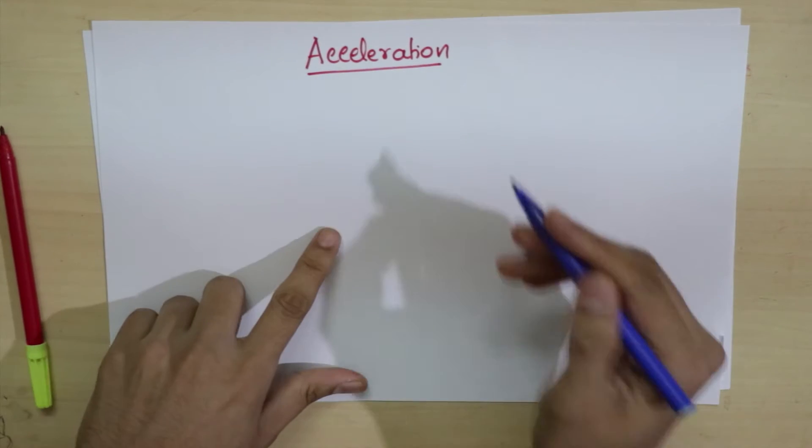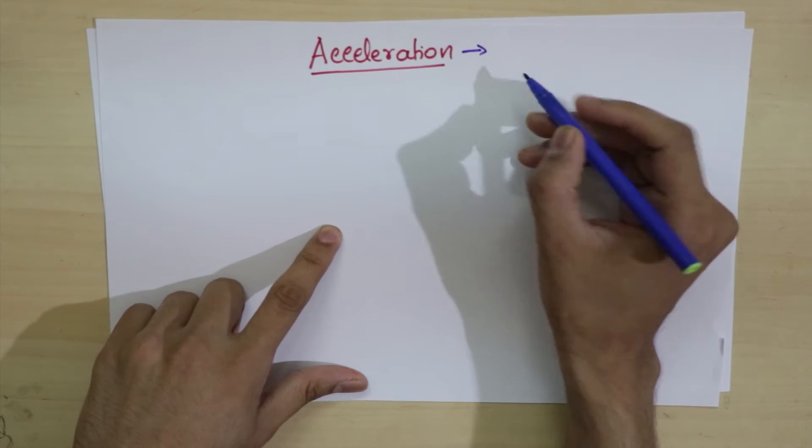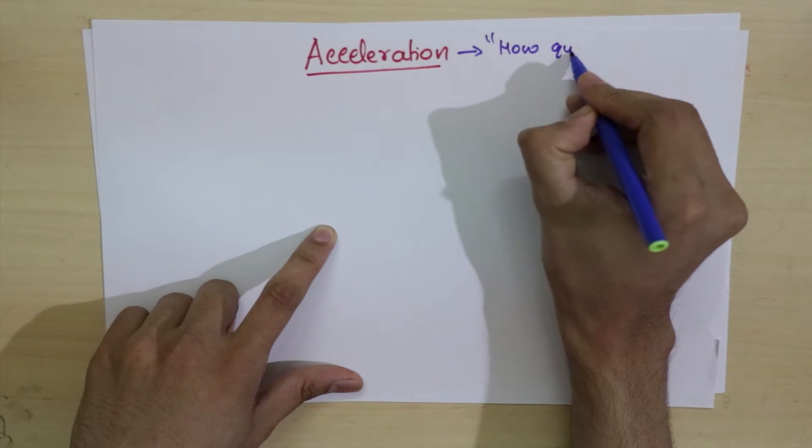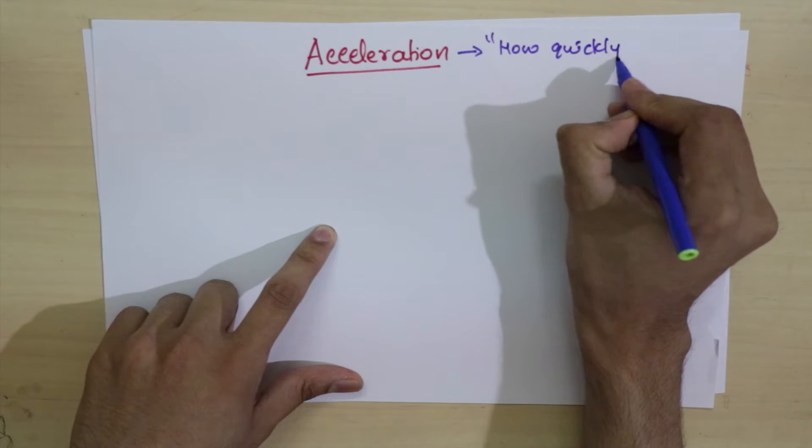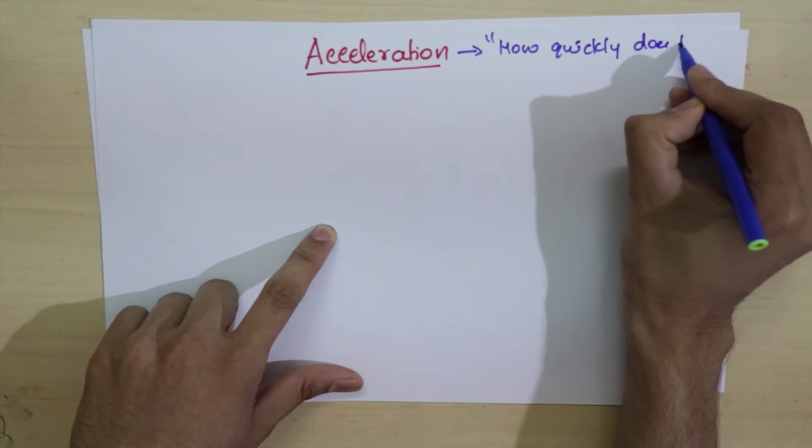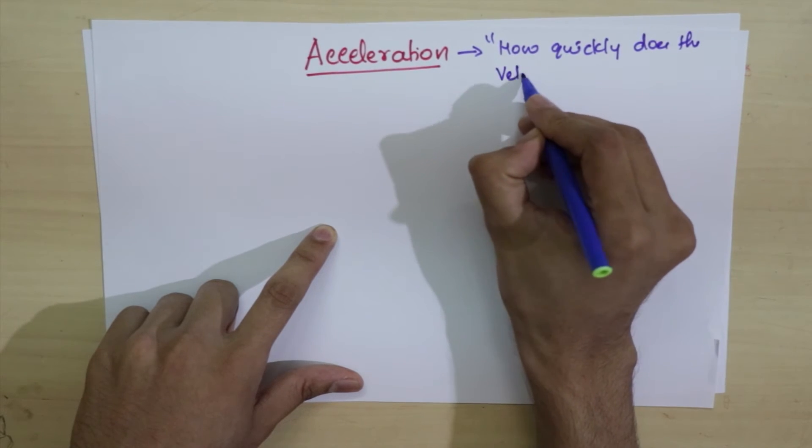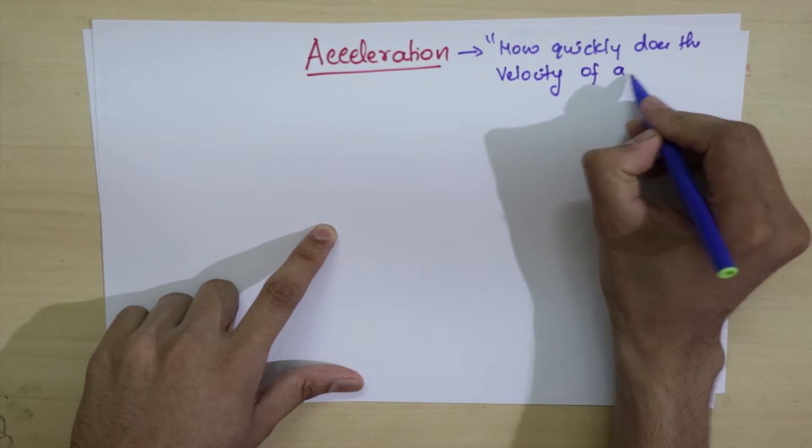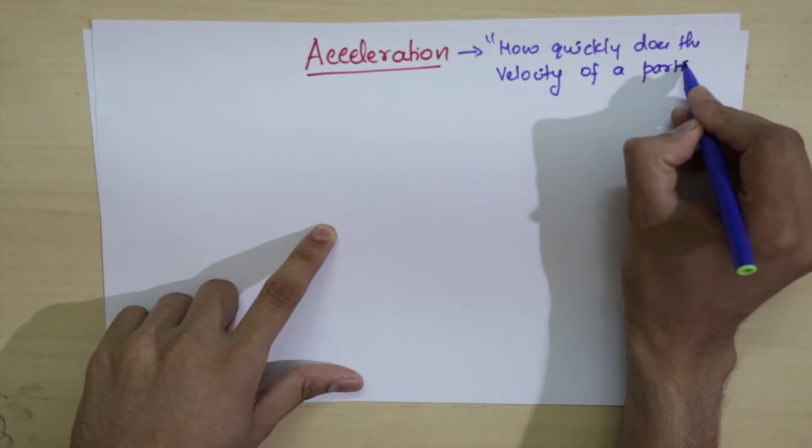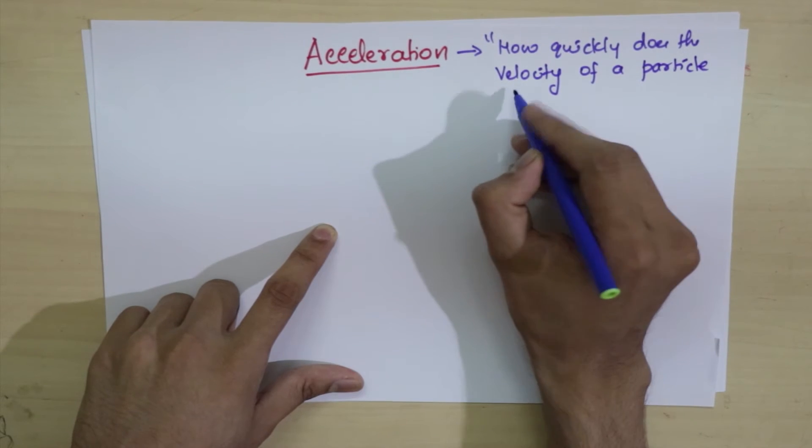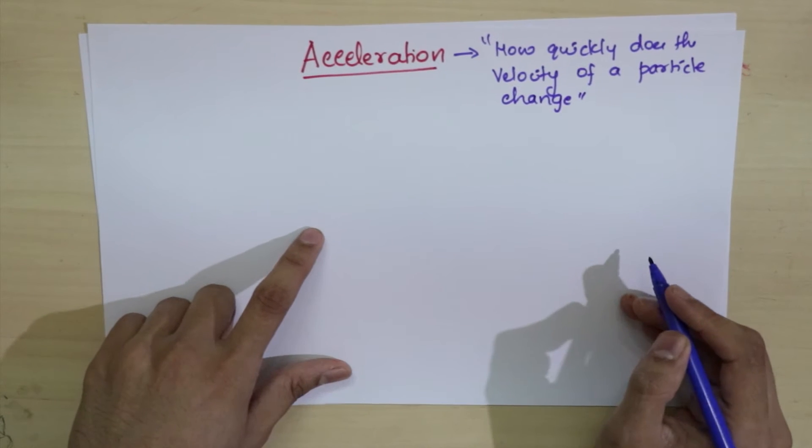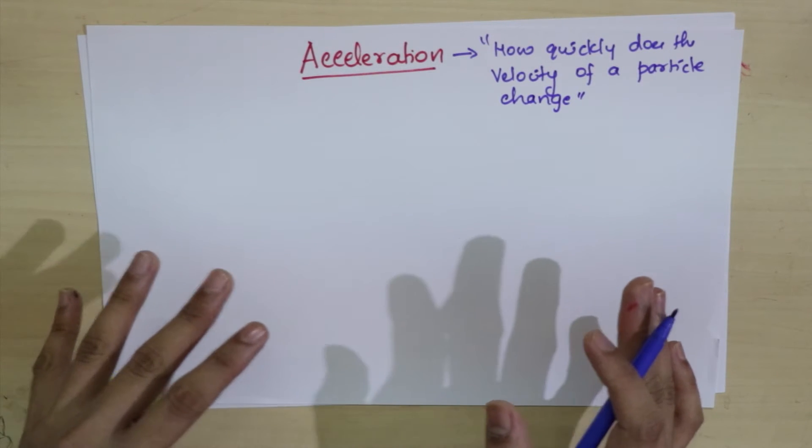Today I'll teach you exactly what acceleration is and what it is not. How do we define acceleration? Well, the simple definition is it tells you how quickly the velocity of a particle or object changes.